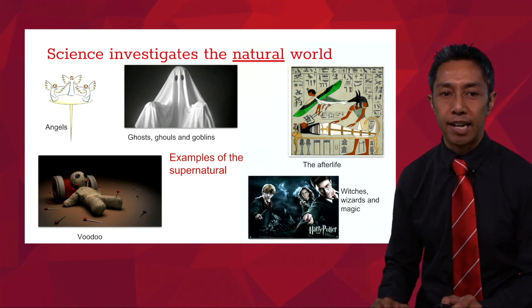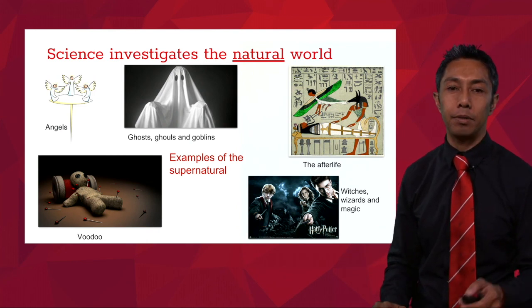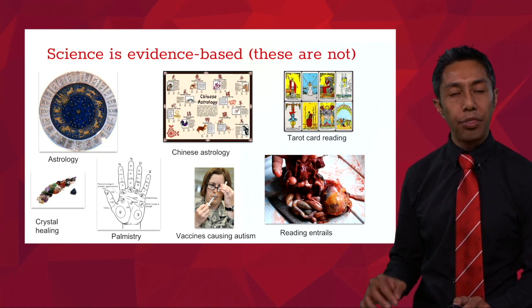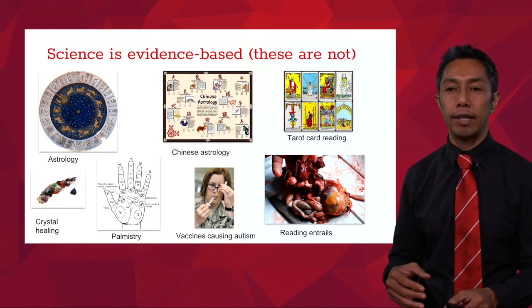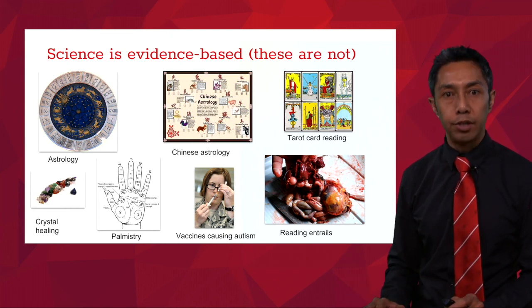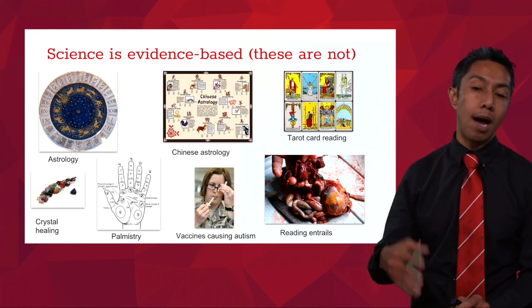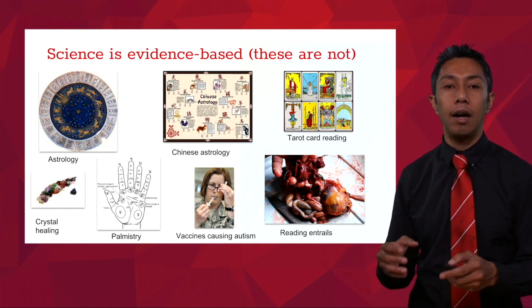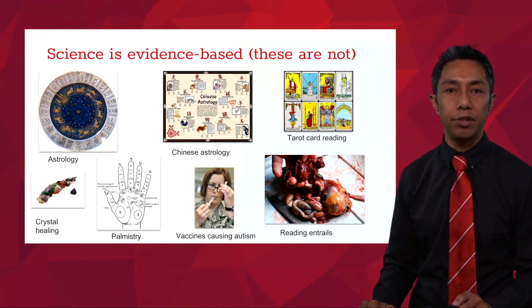Science is also evidence-based, meaning that over time we collect evidence to show that ideas are correct. Examples of what we would call not evidence-based include astrology, Chinese astrology, tarot card reading, palmistry, and claims such as vaccines causing autism. All of those are not evidence-based — there is no evidence to support the basis of those ideas.